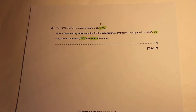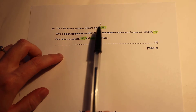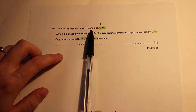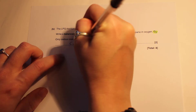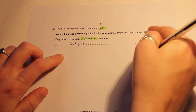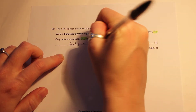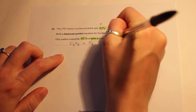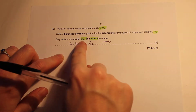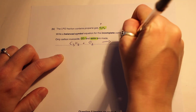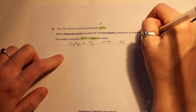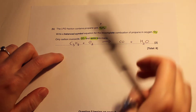The first thing we're going to do is write our equation. We know from the question that propane gas, C3H8, is going to react with oxygen, O2, and then we're going to make carbon monoxide, CO, and water, which is H2O.